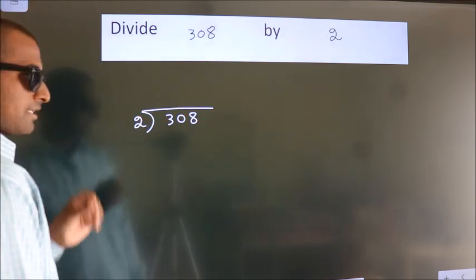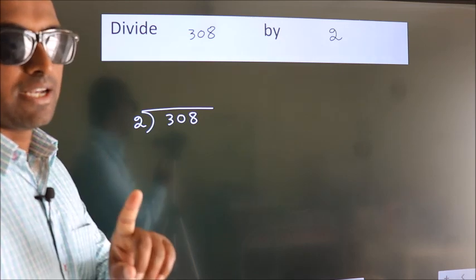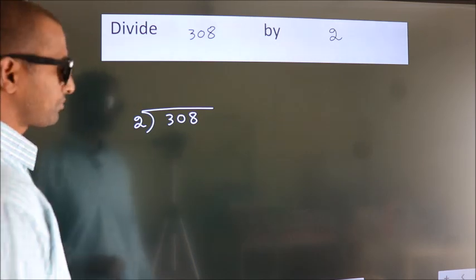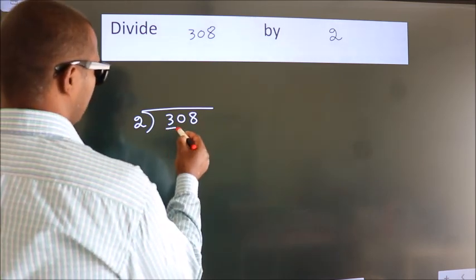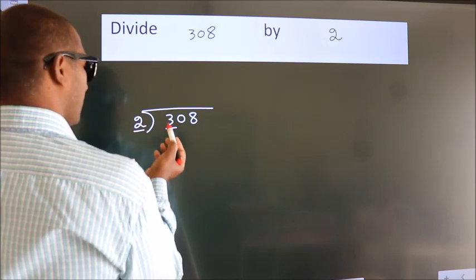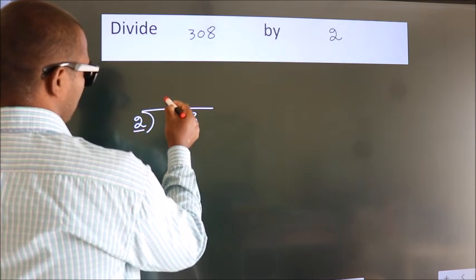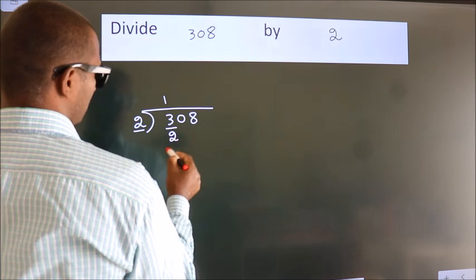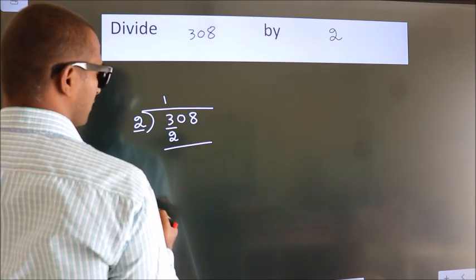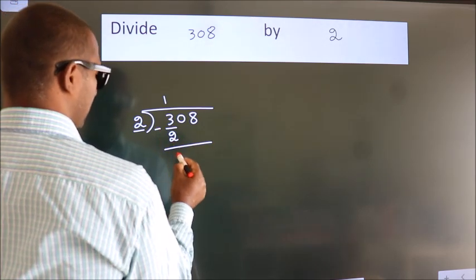This is your step 1. Next, here we have 3, here 2. A number close to 3 in the 2 table is 2 ones 2. Now we should subtract. We get 1.